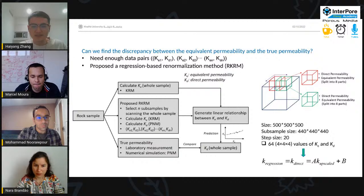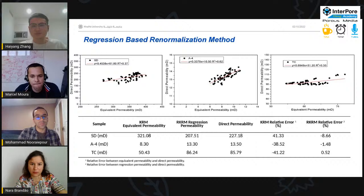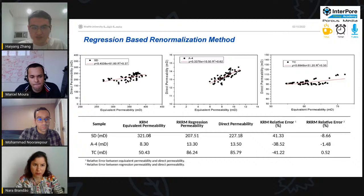Here's the results for the three samples. The x-axis is the equivalent permeability, and the y-axis is the direct permeability. So, you can find there's a kind of linear relationship between these two values. So, now we have the KRM equivalent permeability, which is calculated by those equations. And now we use this new equation, the regression equation, to calculate the RKRM regression permeability. And we have the direct permeability. So, we compare the relative errors. So, you can find there's improvement on the accuracy.